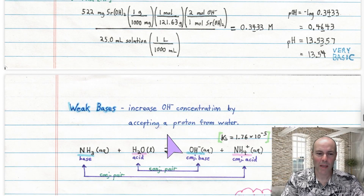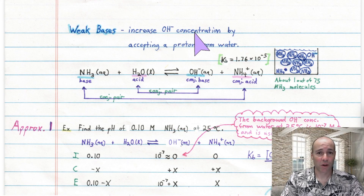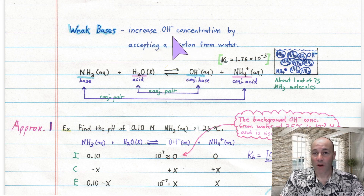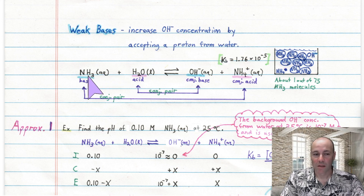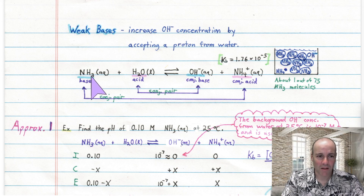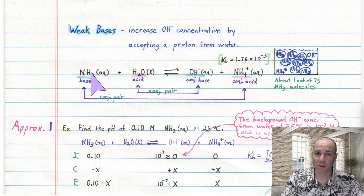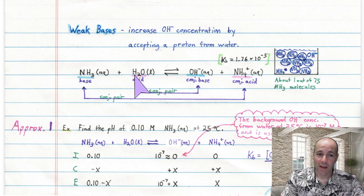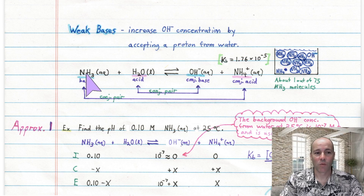Weak bases also increase hydroxide concentration in water, but they do it through a different mechanism. A weak base gives you a hydroxide ion by accepting a proton from water. For example, ammonia (NH3) is a weak base — there is no hydroxide in the ammonia molecule itself, but weak bases accept protons. When ammonia is in aqueous solution, it can take a proton from a water molecule. If it does, that leaves the hydroxide ion — once water loses a proton it turns into hydroxide, and ammonia gains the proton to become ammonium ion.